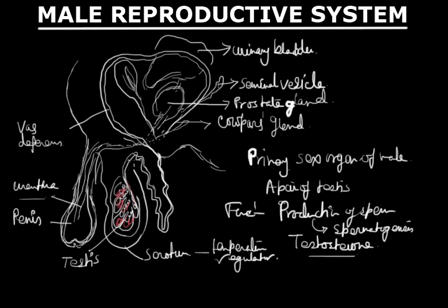From the testes, sperm is produced and passes through a duct known as the vas deferens. This tube-like structure carries sperm from the epididymis to the urethra for transporting sperm.